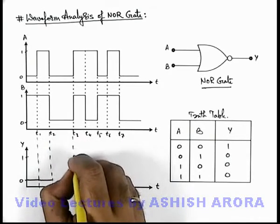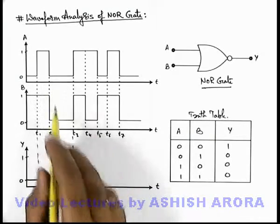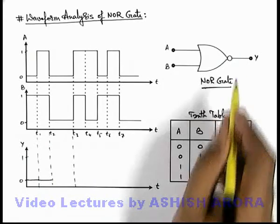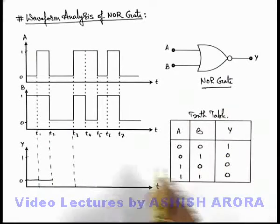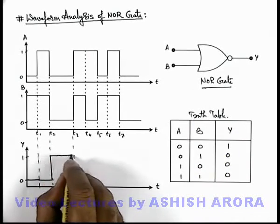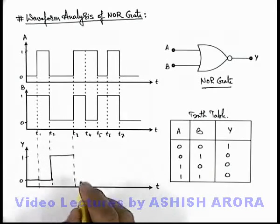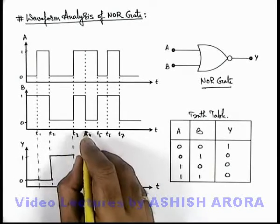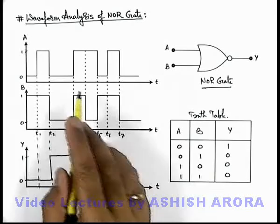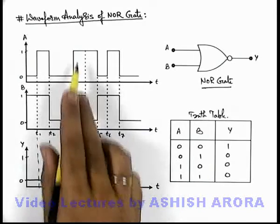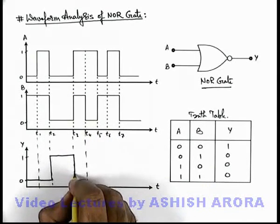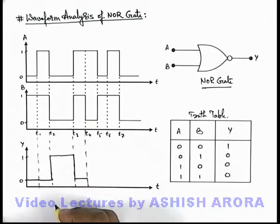From t2 to t3, both signals are in the low (zero) state, corresponding to which the output of the NOR gate is 1, so the output toggles to the high state up to t3. From t3 to t4, both are in high state, so again the output Y will be zero — it'll toggle down to zero.